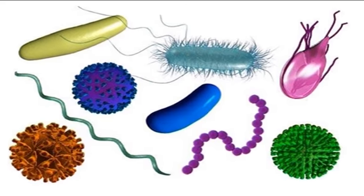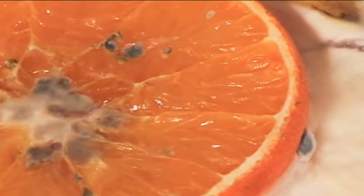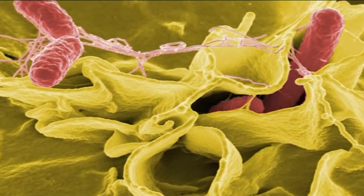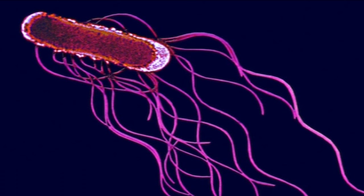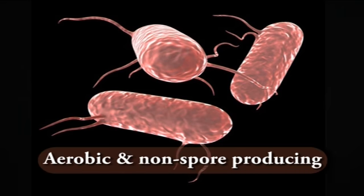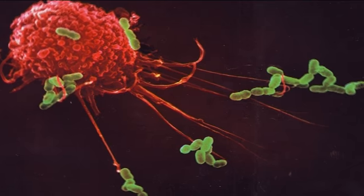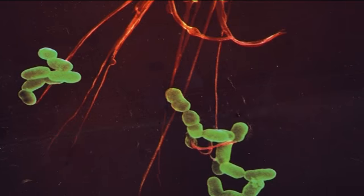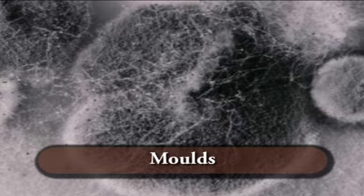Moving on to our second module: Bacterial Food Infection. Bacterial food infection is the commonest cause of bacterial foodborne diseases. Organisms of the Salmonella group cause an infection in the intestine. Many species are infectious. These rod-shaped bacteria are aerobic and non-spore producing. Illness occurs when living organisms are ingested in large numbers. Now we shall discuss the key food poisoning sources, which are viruses, molds and yeast.